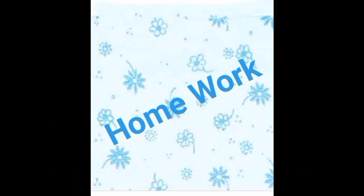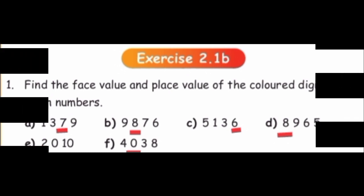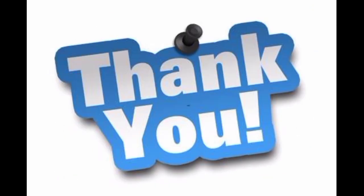Dears, today you have simple homework. Find the face value and place value of the colored digit in the given numbers. And find the special number — I will give you 4 clues. 1st: the tens place is 7. 2nd: the thousands place is 4 less than 10. 3rd: the hundreds place is between 3 and 5. 4th: the ones place is 2 more than 6. 5th: the ten-thousands place is 6. Thank you.